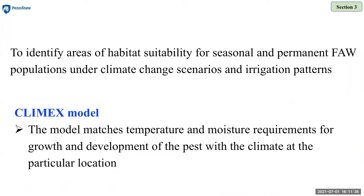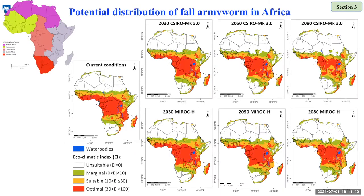The CLIMEX model matches the temperature and moisture requirements for fall armyworm growth and development with the climate at a particular location. In the model output figures, white areas suggest areas unsuitable for fall armyworm year-round persistence, green suggests marginal areas, yellow suggests suitable areas, and red suggests the optimal area for year-round fall armyworm establishment.